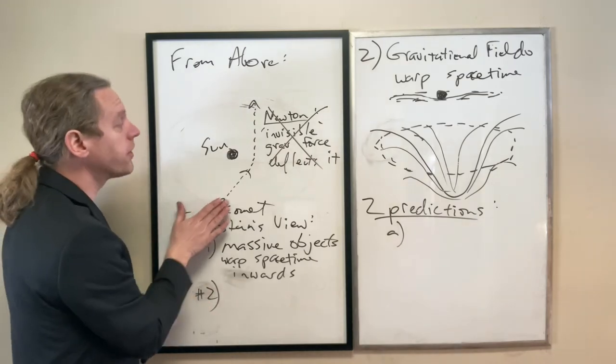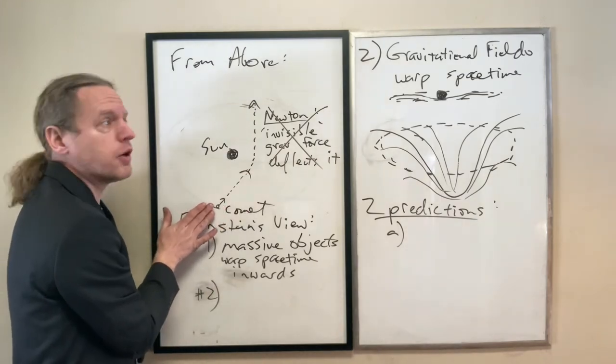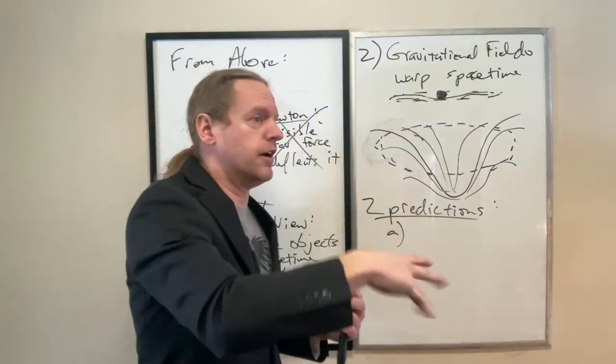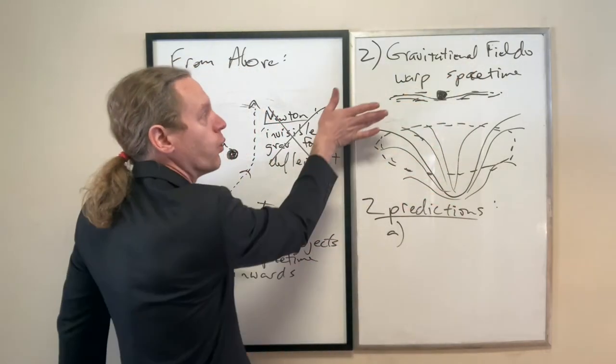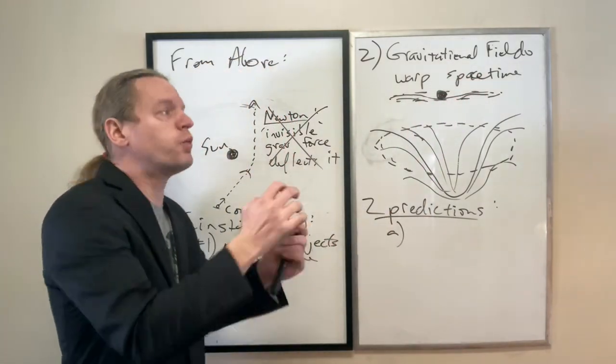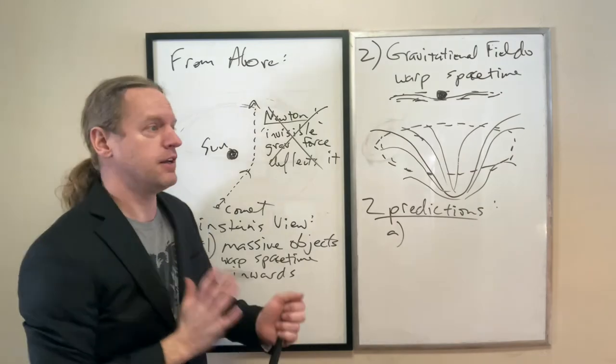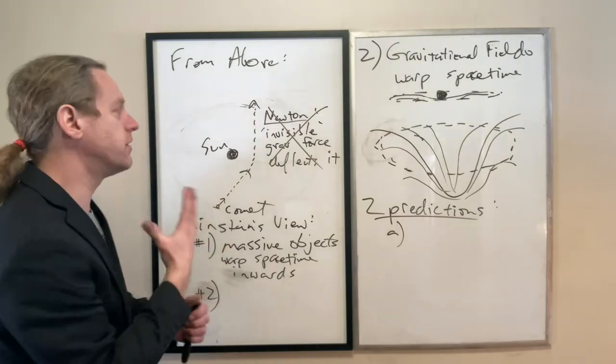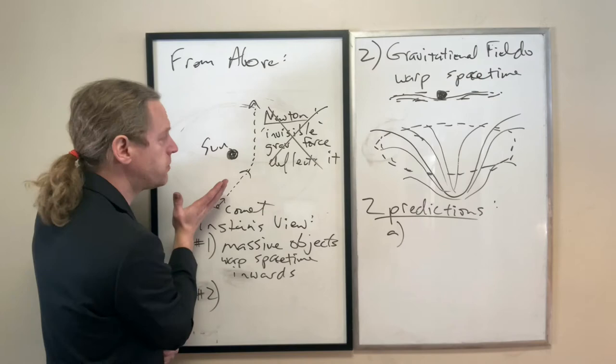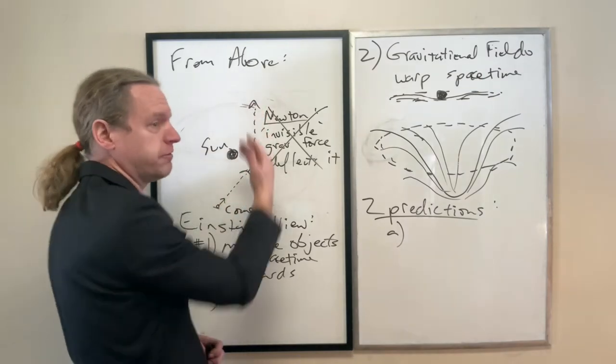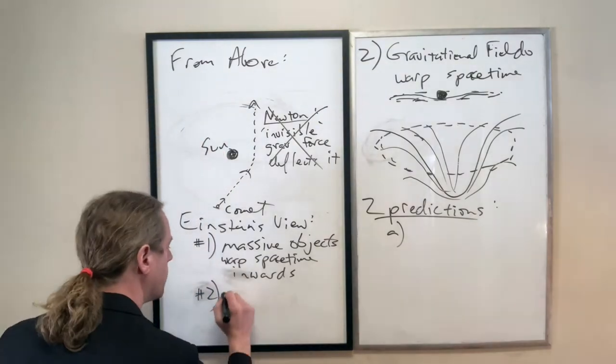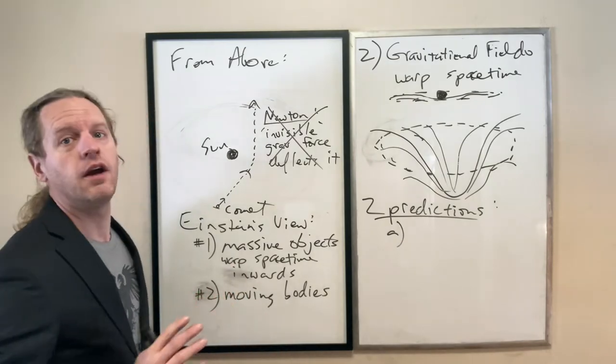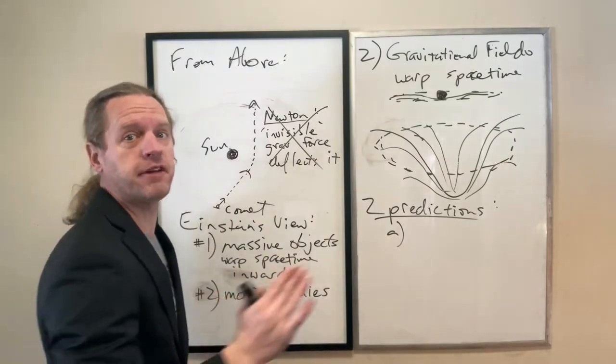And number two, other moving bodies naturally follow the straightest path or the most direct path they can. But just like in this example here of a deflected 2D surface, when you curve space, what we think of as a direct path when we view it from further out is a globally curving path. So that's a little bit confusing, but the idea, though, is that by following what appears to be a straight path in curved space-time, you're actually following a curved path. So moving bodies follow the direction of curvature of space-time.